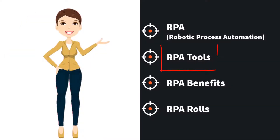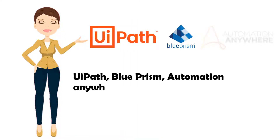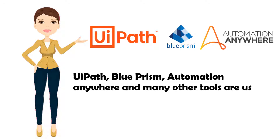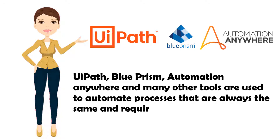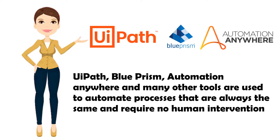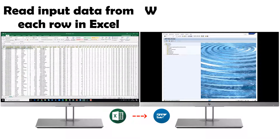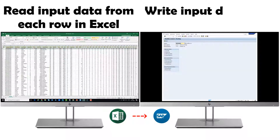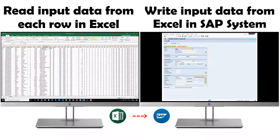Now we turn to the second point: RPA tools. UiPath, Blue Prism, Automation Anywhere, and many other tools are used to automate processes that are always the same and require no human intervention. Here we have an example where an employee reads data from Excel and enters them into SAP. We can see that the amount of data is very large, and the employee can make mistakes about what he has already done, which row he is in, and whether the entered data is correct.